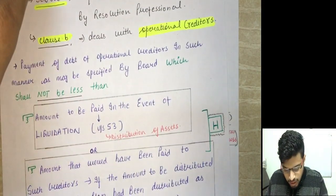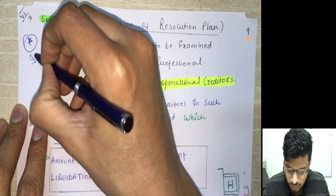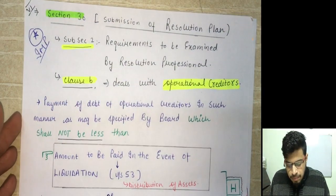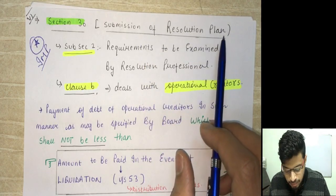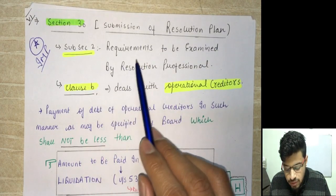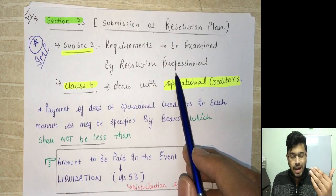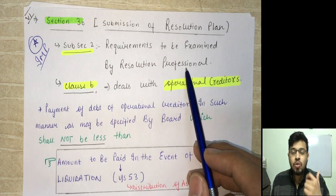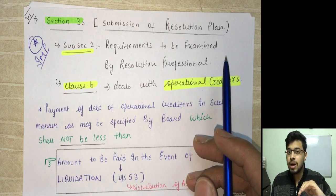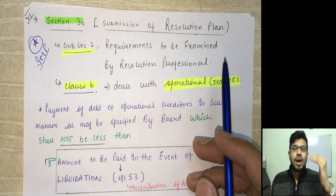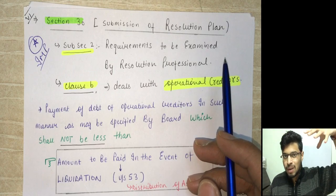Very important amendment: section 30, which deals with submission of resolution plan. Subsection 2 deals with requirements to be examined by the resolution professional. The resolution professional must check that the resolution plan conforms to certain requirements — one key point is with respect to operational creditors and the minimum payment they must receive, compared against the section 53 waterfall mechanism amount in the case of liquidation.